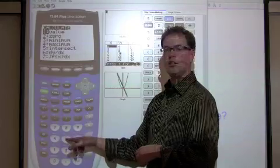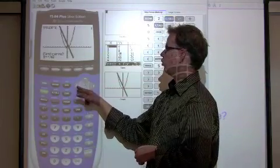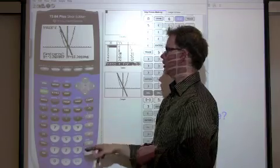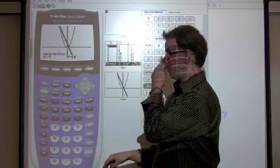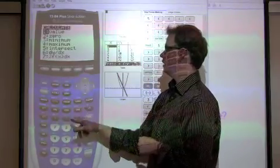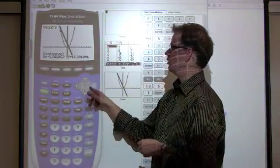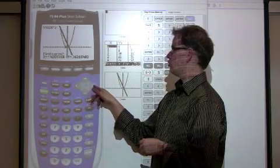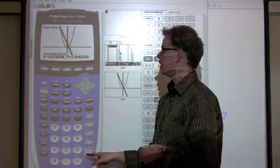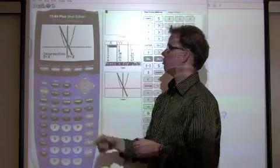Again, second calc. Go to five. Scroll over to the one. Enter three times. And the answer is negative three. Second calc intersect. Scroll over to the other one. Enter three times. And the other answer is 0.5 again.